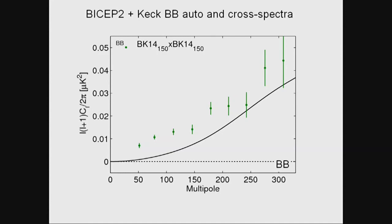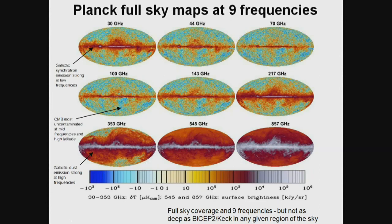Whether this was actually a gravitational wave signal — which had a spectrum peaking around L=100 — required looking at other frequencies. In 2014, after the initial announcement, we started working with the Planck collaboration. Planck is a satellite mission that produced a beautiful temperature and polarization map with wide frequency band coverage — all-sky coverage out to 850 GHz. We were particularly interested in the 353 GHz polarization measurement because that has the largest sensitivity to galactic dust, which is also polarized.